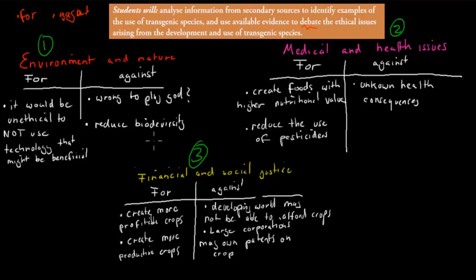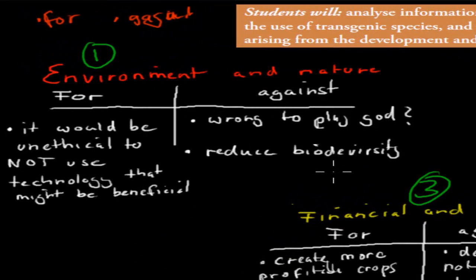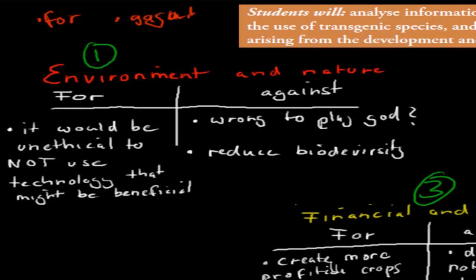So for example, when it comes to the environment and nature, what reasons are there to produce transgenic species to improve the environment and nature, and what are there against it? One sort of ethical issue, one point for it would be that it would be unethical not to use technology. It might be beneficial. So now we can make insulin and antithrombin medication using bacteria and sheep respectively. It would almost be unethical if we didn't use it to improve our well-being. So that would be one argument for changing nature, because we could make nature help us.